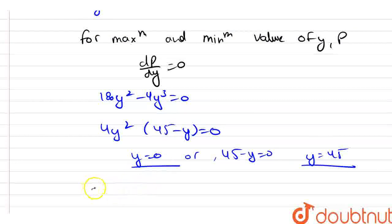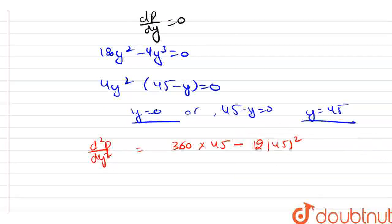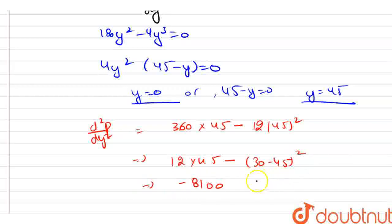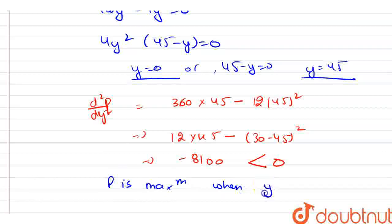Now, d²P/dy² evaluated at y equals 45 gives 360 into 45 minus 12 into 45². After solving, this equals negative 8100. Since this value is negative — less than 0 — P is maximum when y is equal to 45.